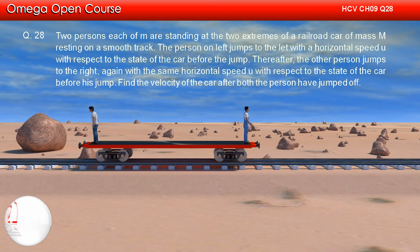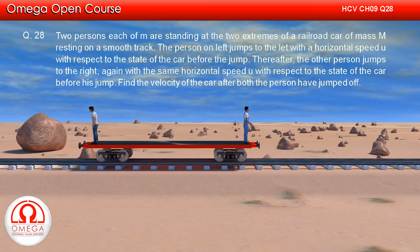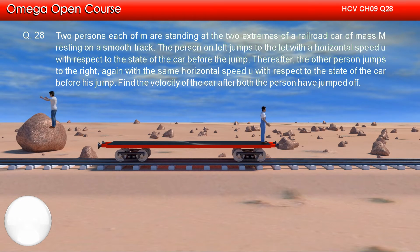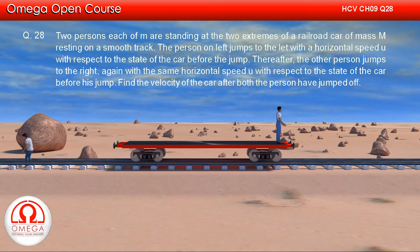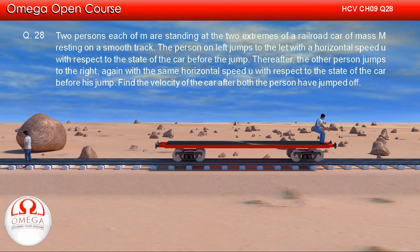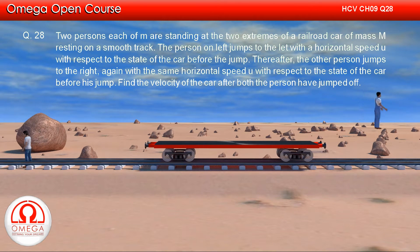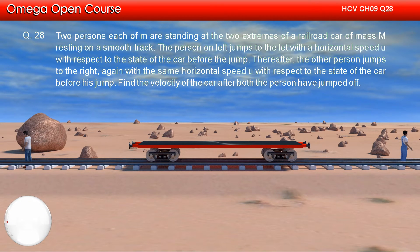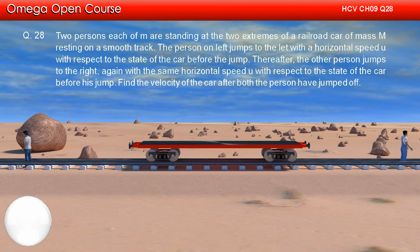Two persons, each of mass m, are standing at the two extremes of a railroad car of mass M resting on a smooth track. The person on the left jumps to the left with a horizontal speed u with respect to the state of the car before the jump. Thereafter, the other person jumps to the right, again with the same horizontal speed u with respect to the state of the car before his jump. Find the velocity of the car after both persons have jumped off.